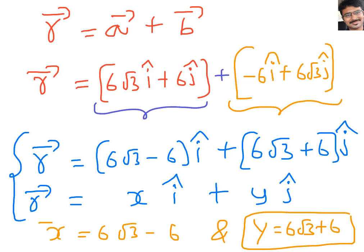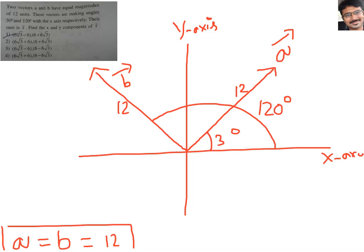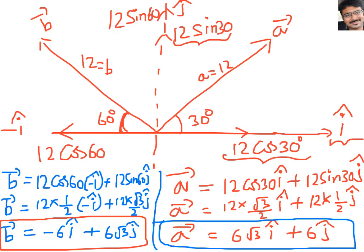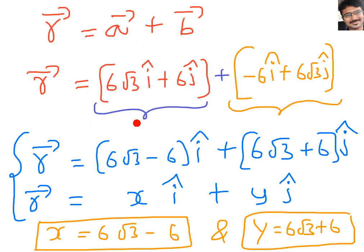These are the answers: x component equals 6 root 3 minus 6, and y component equals 6 root 3 plus 6. I made the explanation a bit lengthy to give all the calculation details, but in an exam you can do it faster. The method is: identify the angles, resolve into components using cos and sin, write in i cap and j cap notation, then add to get R bar. Thank you very much.